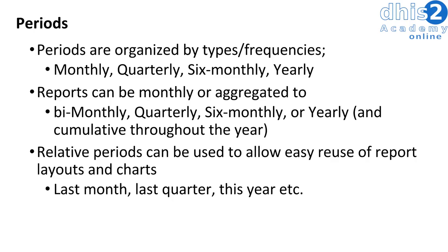The last core dimension we will discuss are the periods — this is the when aspect of our data dimensions. Periods are organized by types and frequencies. This can include monthly, quarterly, six-monthly, yearly, and other period types. If we have data that is collected monthly, we can create reports that are monthly, or we can aggregate these reports to anything above that period — so that monthly data can be automatically aggregated to show data bi-monthly, quarterly, six-monthly, yearly, and any other period above the monthly period.